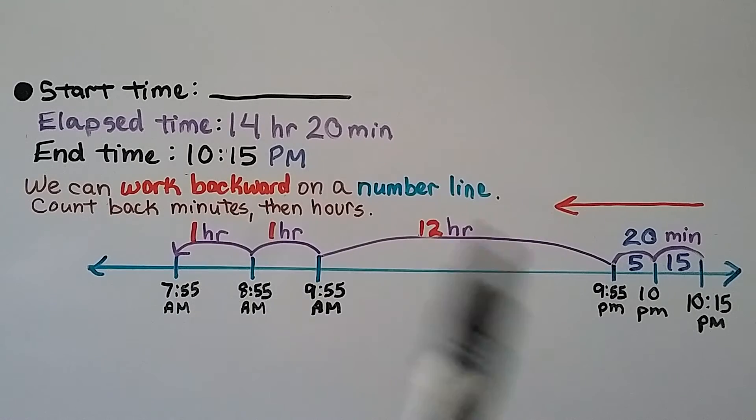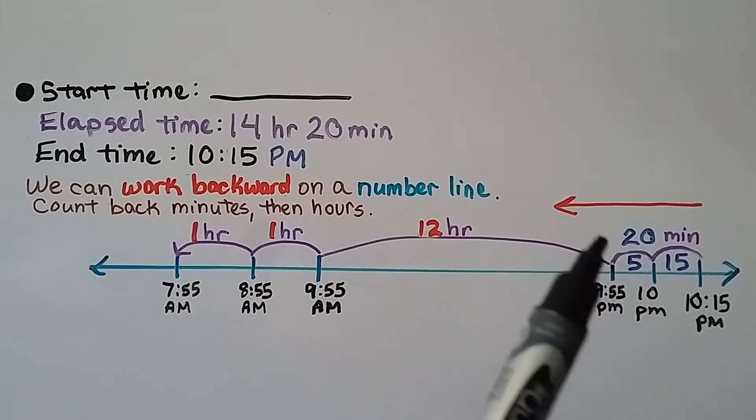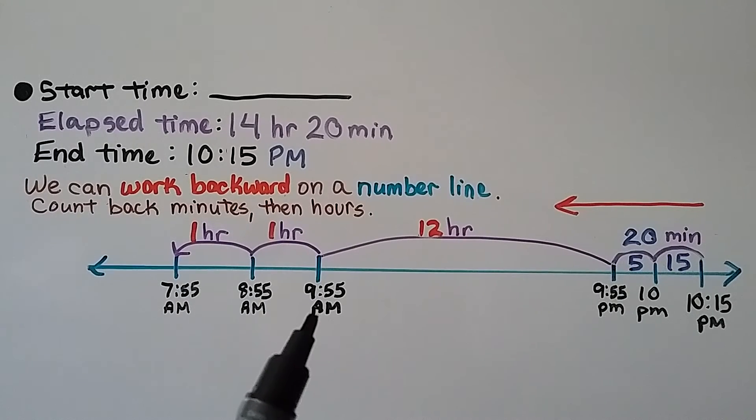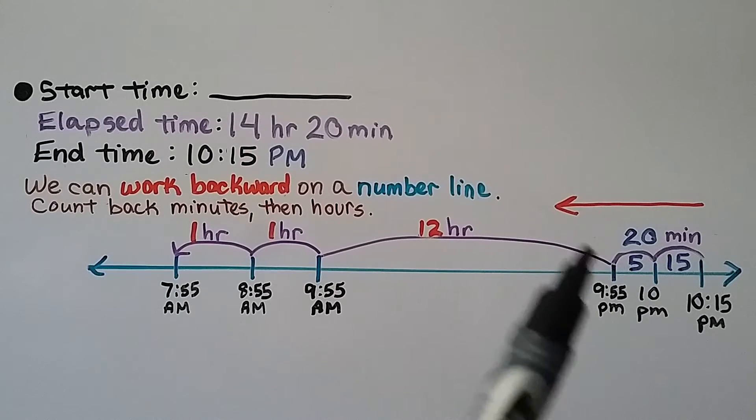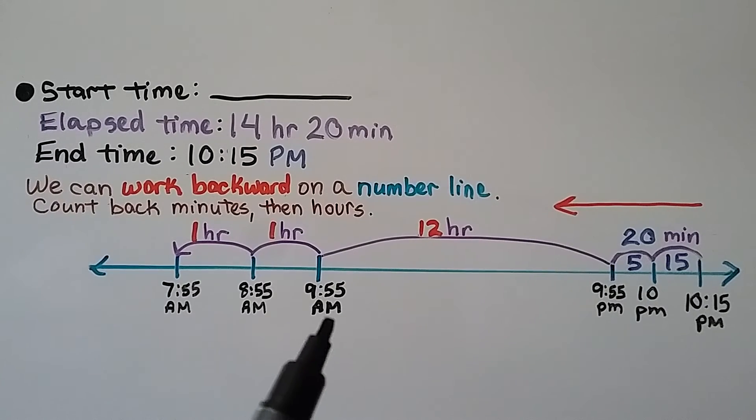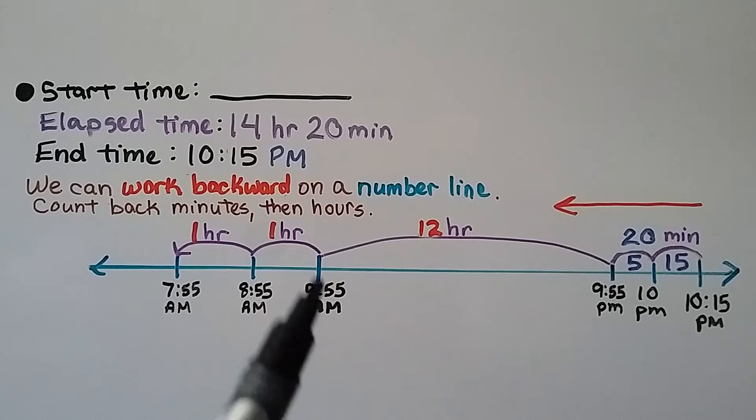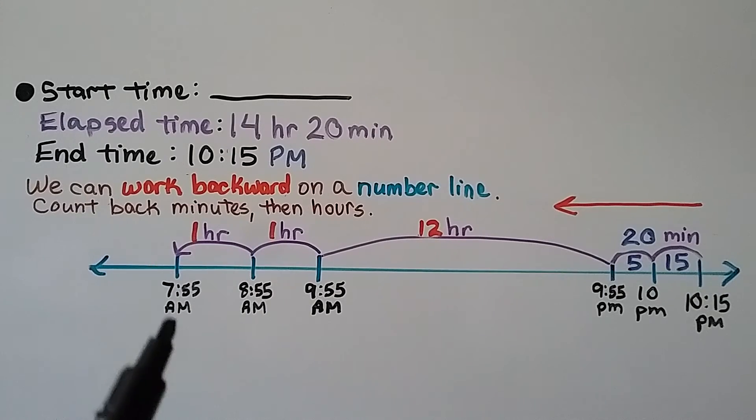We need to take away 14 hours so we can jump a 12-hour increment to 9:55 AM. So we went from PM to AM because we went back 12 hours. Now we can take away another hour, then our last hour, which puts us at 7:55 AM. We've gone back 14 hours and 20 minutes. That means our start time is 7:55 AM.